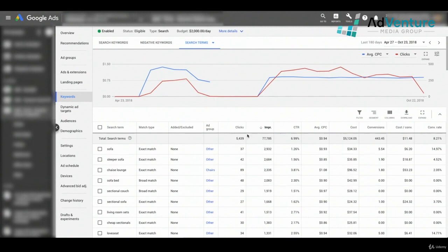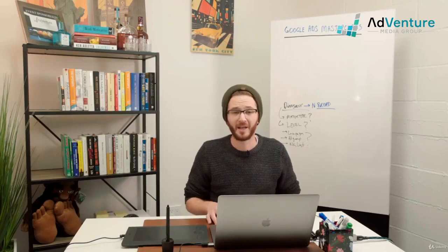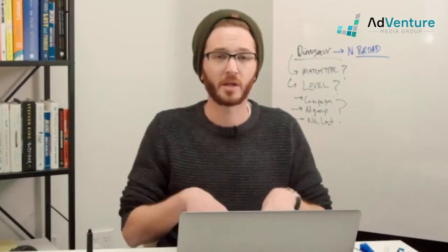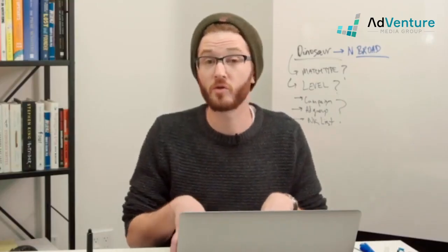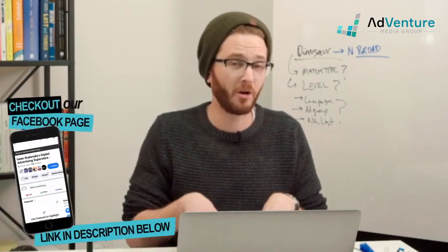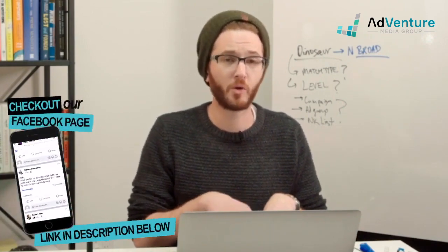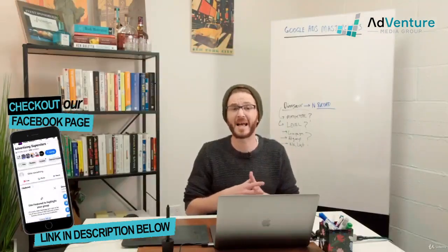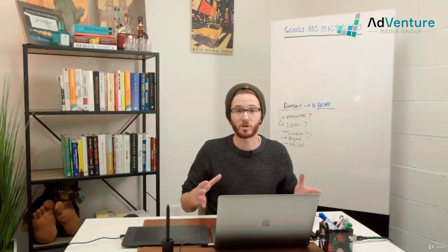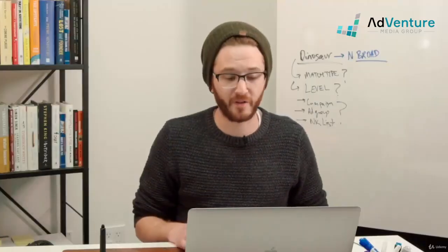So here we are in a campaign that has lots of different clicks — about 5,500 search terms. The first level is to not pay attention to search terms that have too few clicks. If a search term has under 30 clicks, it's typically too few to assess whether or not it's going to be valuable. It's just not enough data.